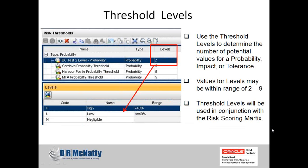Here's another example showing threshold levels. Previously we looked at a threshold with five levels of cost impact. Here we're setting our threshold for probability, and I've set the threshold levels to two. So if I wanted a more simplified view of my probability — whether it's a high or low probability — I can set the different levels of my threshold. The values for my levels can range anywhere from two to nine. These levels will be used in conjunction with our risk scoring matrix.